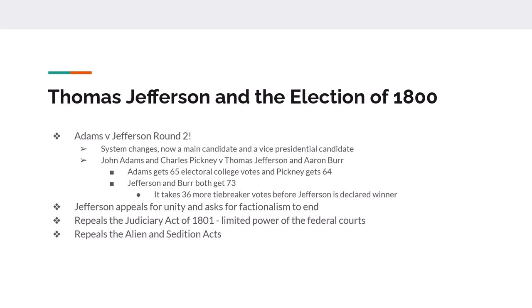John Adams runs with Charles Pickney, and Thomas Jefferson runs with Aaron Burr. In the end, Jefferson and Burr tie — both get 73 votes — and then they tie again 36 more times before Thomas Jefferson is finally declared the overall winner. Jefferson becomes president and Aaron Burr becomes vice president. One of the very first things Jefferson does is repeal the Alien and Sedition Acts.